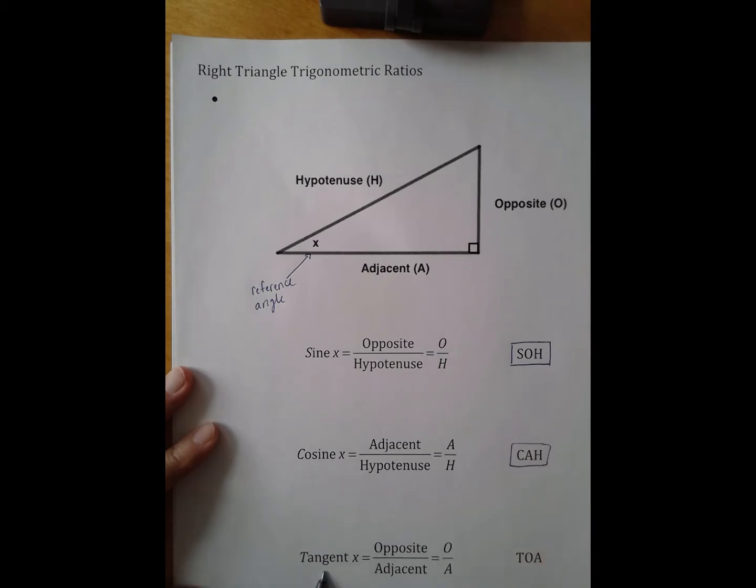And then tangent of the angle is going to be the opposite over the adjacent, O over A. And we simplify that to be TOA.